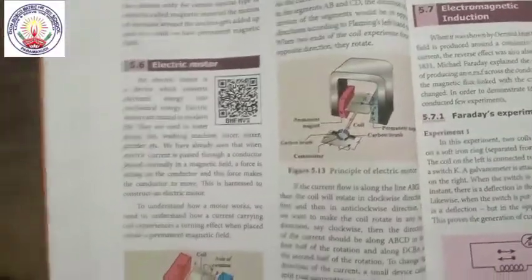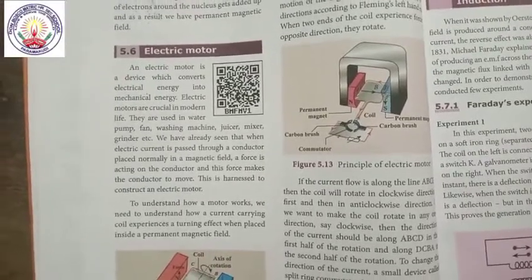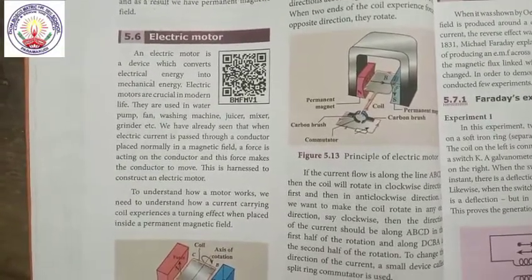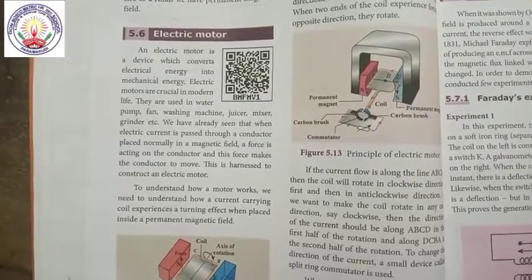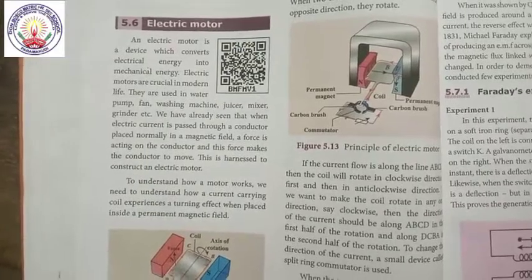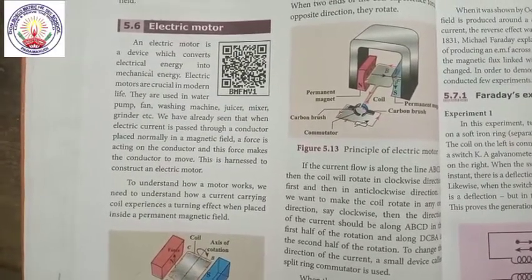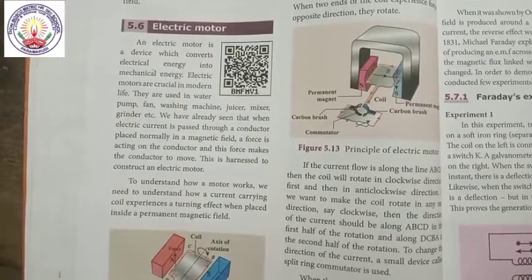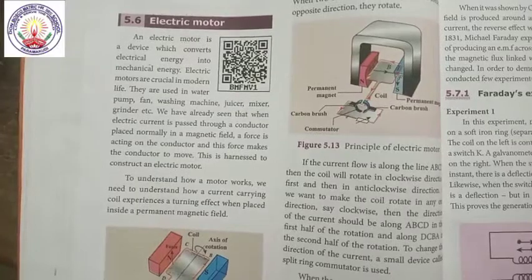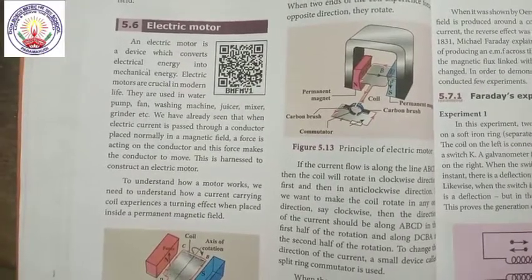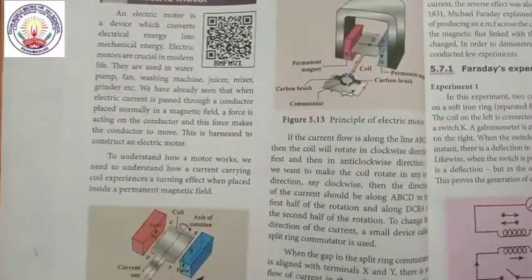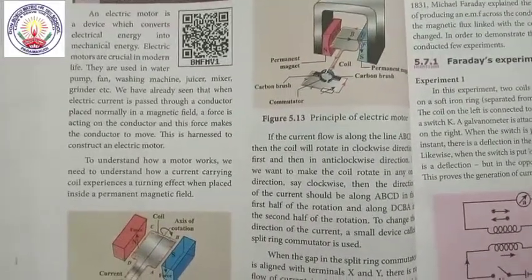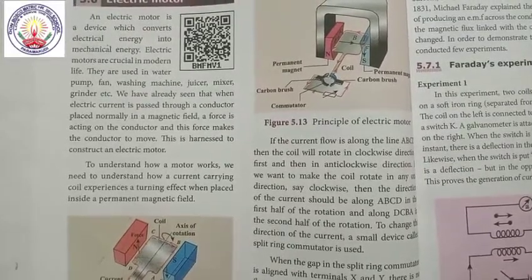Next, we discover about the electric motor. An electric motor is a device which converts electrical energy into mechanical energy. Electric motors are crucial in modern life — they are used in water pumps, fans, washing machines, juicers, mixers, grinders, etc. When electrical current is passed through a conductor placed normally in a magnetic field, a force acts on the conductor and makes it move. To understand how a motor works, we need to understand how a current-carrying coil experiences a turning effect when placed inside a permanent magnetic field.